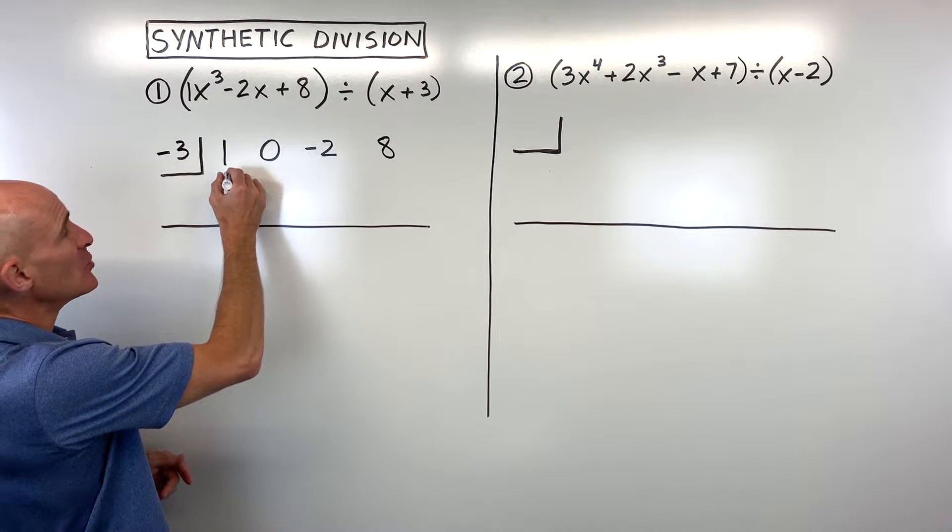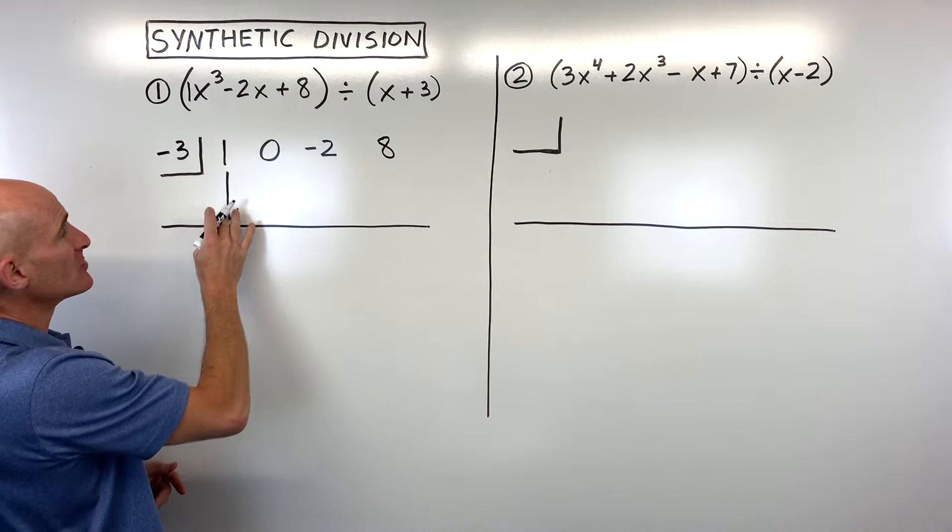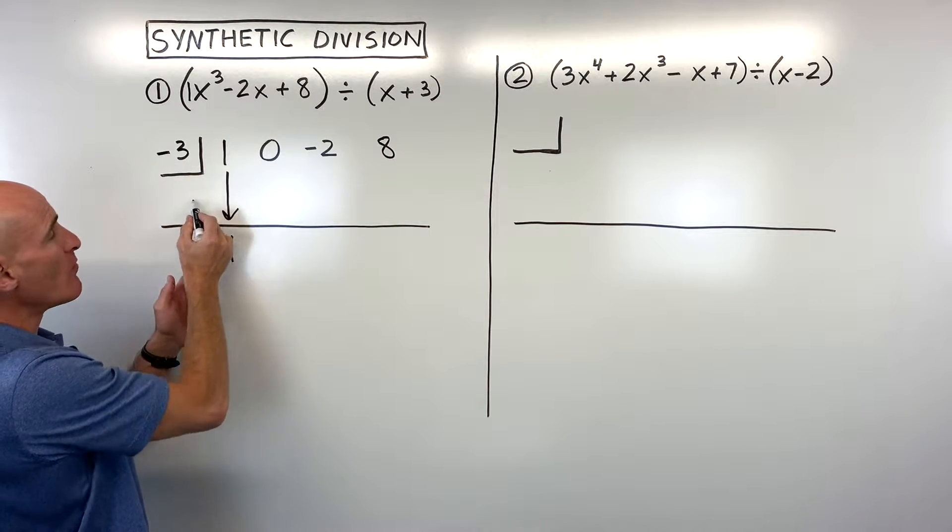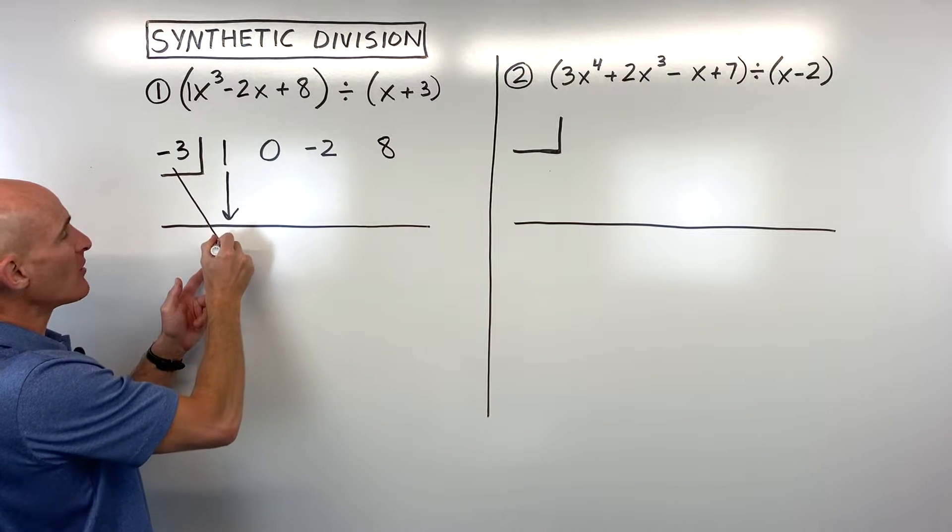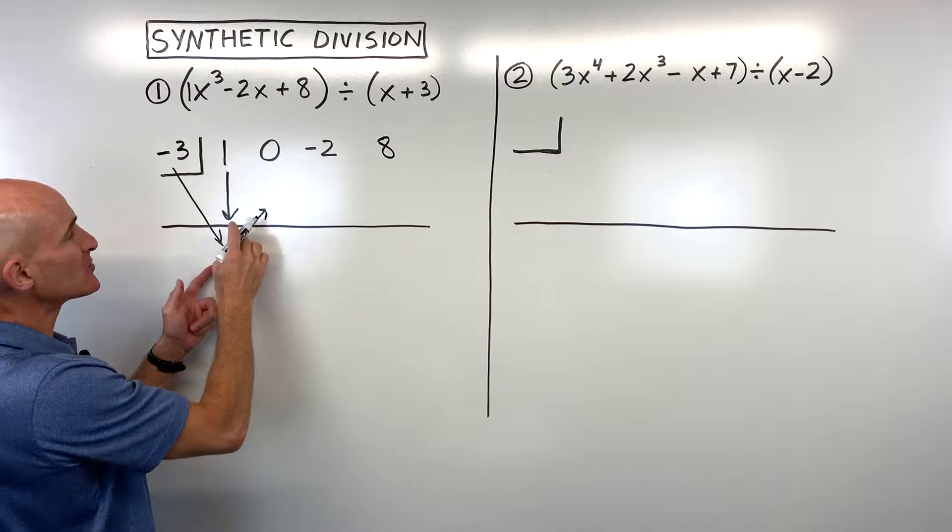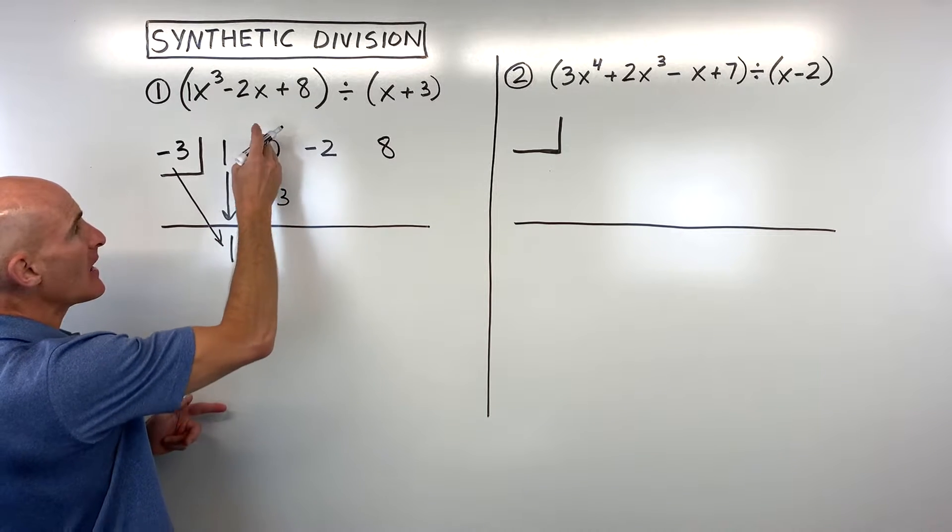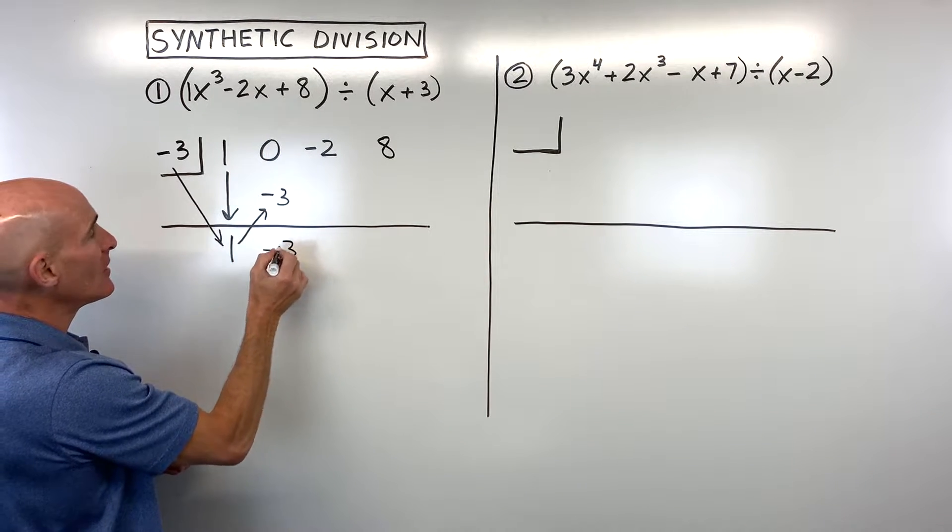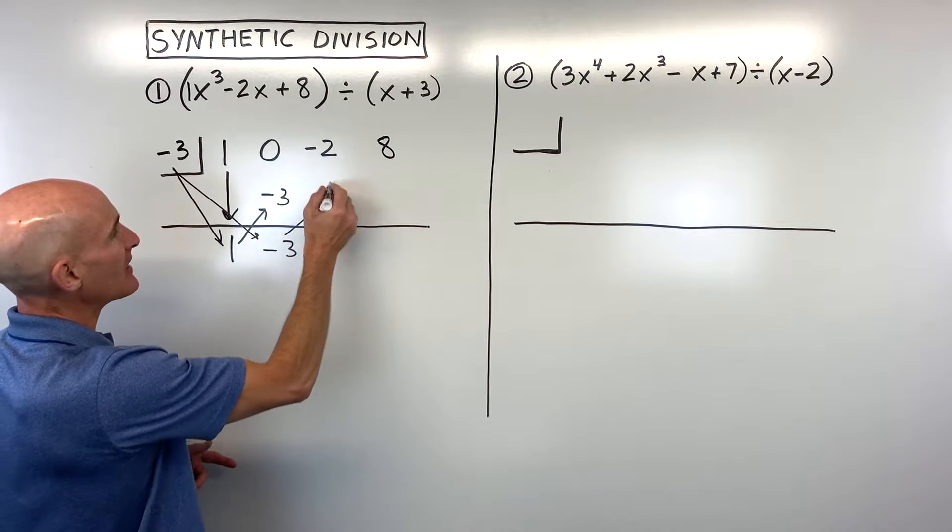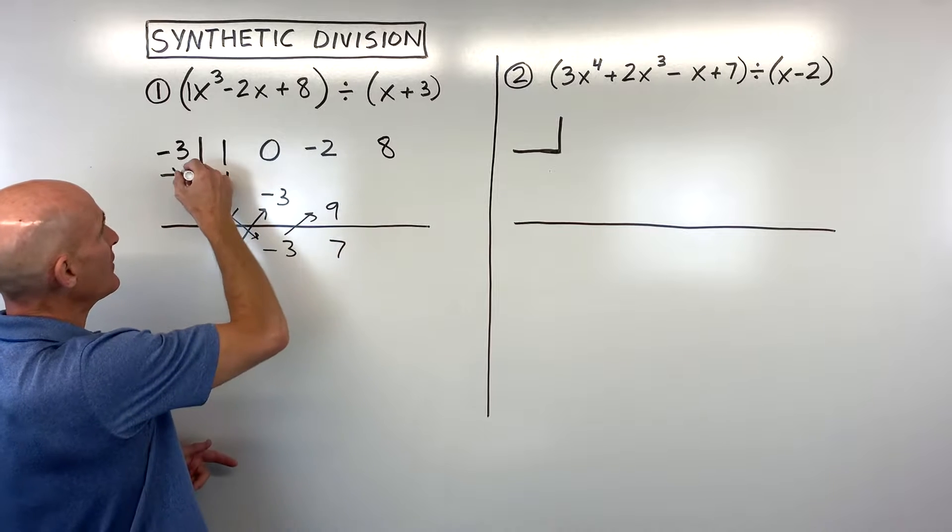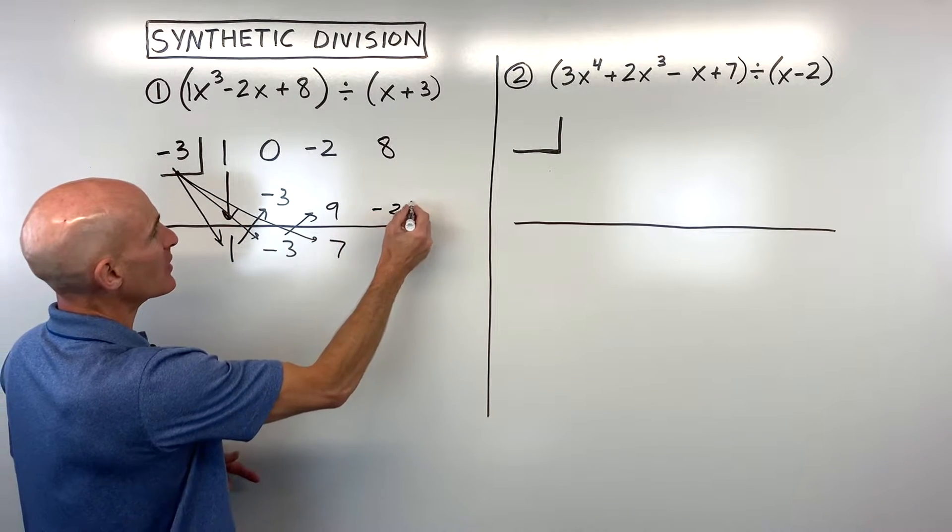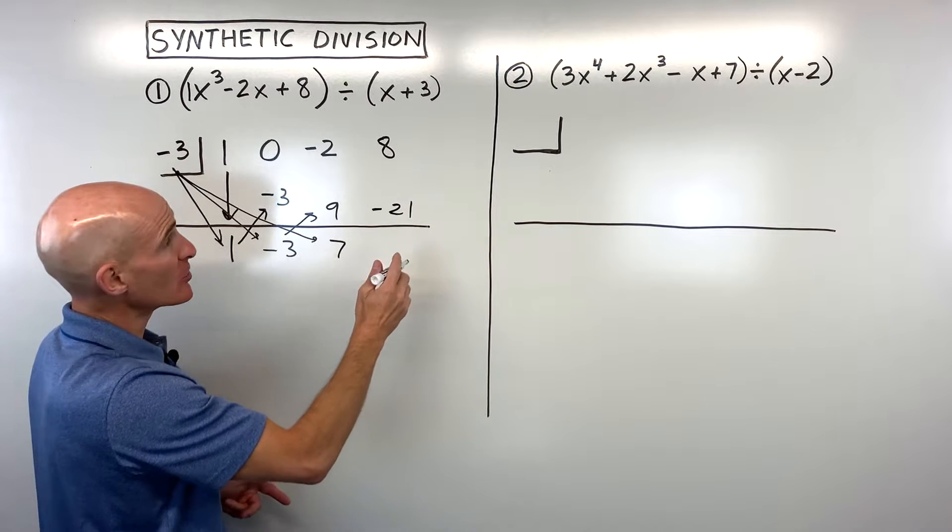Now, the first step, you want to drop down that first number. So whatever this number is, you bring it down, and then what you do is you multiply on the diagonal. And I'm going to draw lines. You don't have to draw these lines, but you multiply on the diagonal, negative 3 times 1, and that number goes right here, and then you add straight down. And then you multiply on the diagonal. So negative 3 times negative 3 is 9. And then you add straight down. And then you multiply on the diagonal. So negative 3 times 7 is negative 21. And then you add straight down.